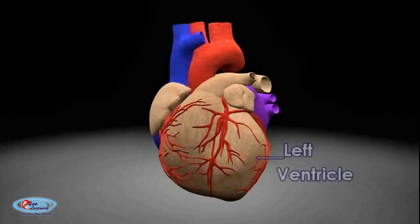The left ventricle is one of four chambers — two atria and two ventricles — in the human heart. It receives oxygenated blood from the left atrium via the mitral valve, and pumps it into the aorta via the aortic valve.